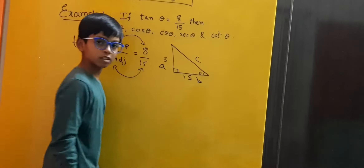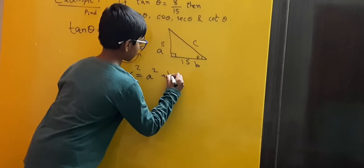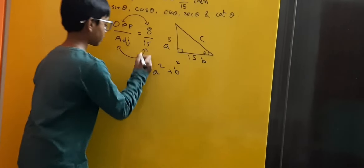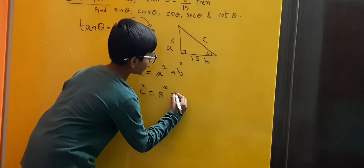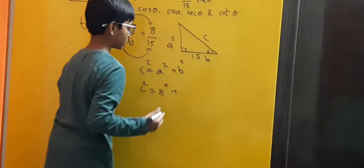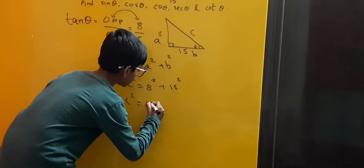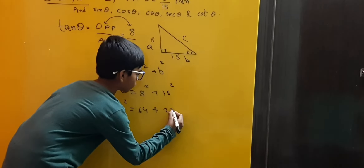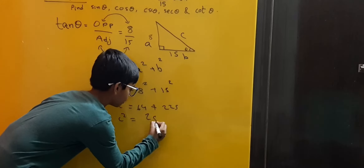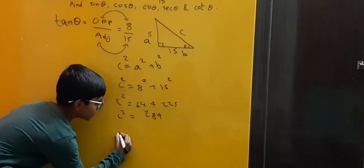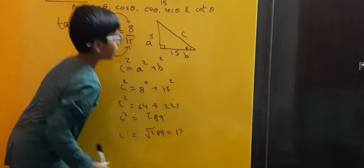Let us substitute the values in Pythagoras theorem, which says C squared is equal to A squared plus B squared. Here we have to find C, so: C squared is equal to 8 squared plus 15 squared, which gives 64 plus 225, equal to 289. Therefore C is equal to the square root of 289, which is 17.